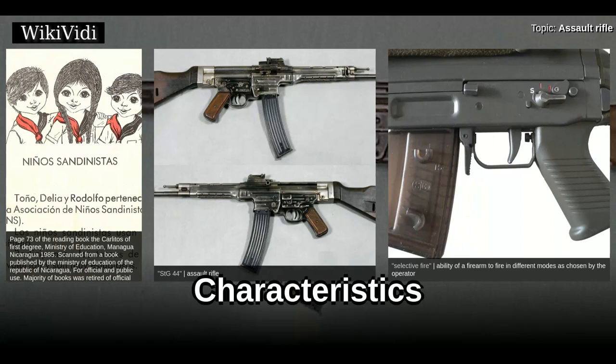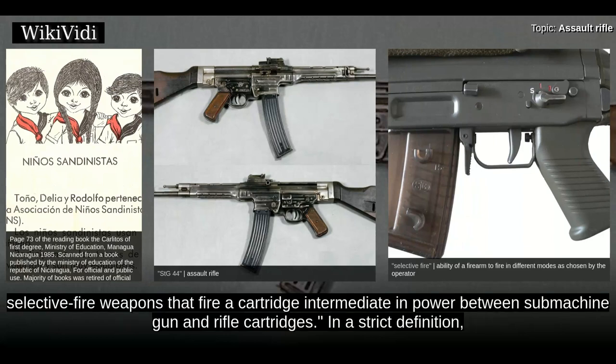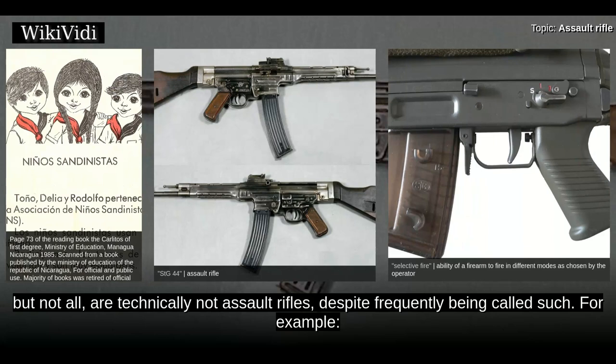Characteristics: The U.S. Army defines assault rifles as short, compact, selective fire weapons that fire a cartridge intermediate in power between submachine gun and rifle cartridges. In a strict definition, a firearm must have at least the following characteristics to be considered an assault rifle. Rifles that meet most of these criteria, but not all, are technically not assault rifles, despite frequently being called such.